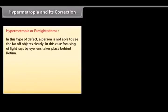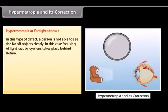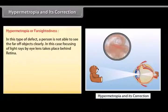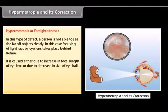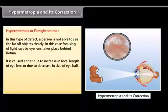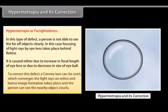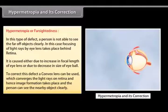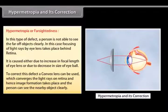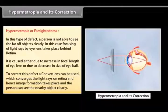Hypermetropia and its correction: In this type of defect, a person is not able to see nearby objects clearly. Focusing of light rays by the eye lens takes place behind the retina. It is caused either due to an increase in focal length of the eye lens or a decrease in size of the eyeball. To correct this defect, a convex lens is used, which converges the light rays onto the retina so that image formation takes place and the person can see nearby objects clearly.